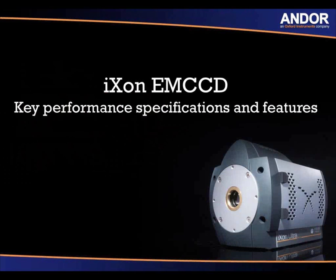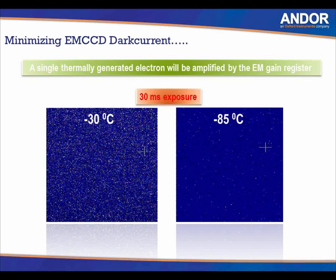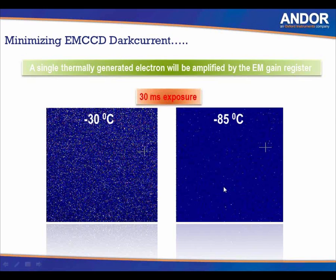In terms of key performance specifications for EMCCD, it's very important that you minimize your dark current and ensure cooling is on. Two images depict the effect of not cooling your camera sufficiently. Cooling to minus 30 degrees versus minus 85 shows a dramatic difference in image noise. Using a 30-millisecond exposure with EM gain, if you have any other noise present, the EM gain will amplify the noise as well as the signal. Just by cooling to minus 85, all of this dark noise is removed from your image.